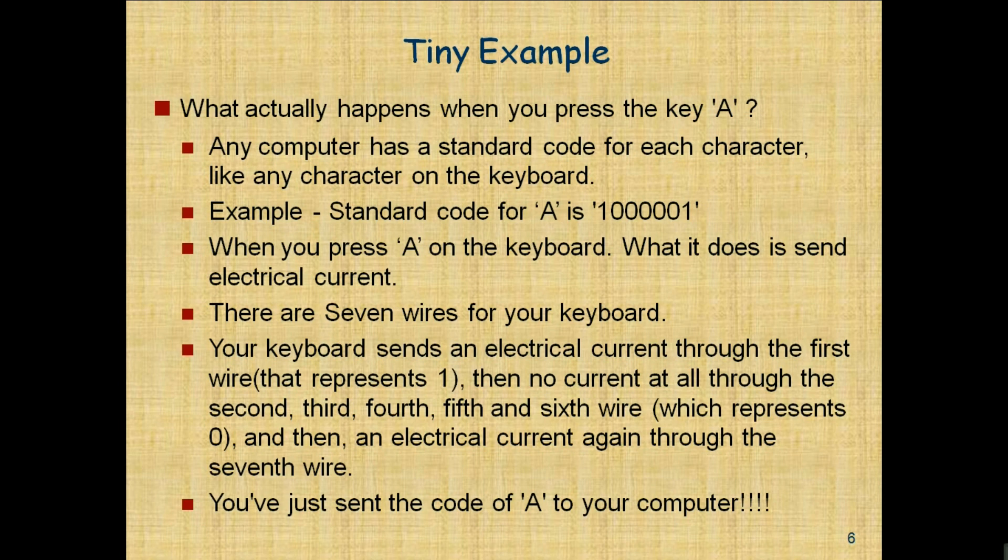When your keyboard sends the electrical signal, the computer detects which circuits received current. Your computer says: 'Circuit number one received electrical current, which means 1. Circuit number two did not receive current, therefore it must be 0. Circuit number seven received electrical current, that means 1.'